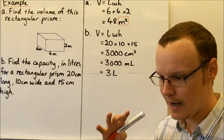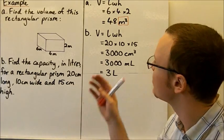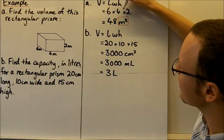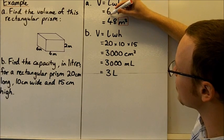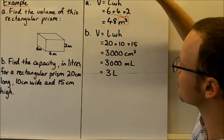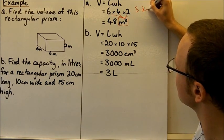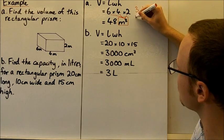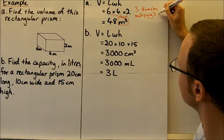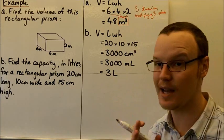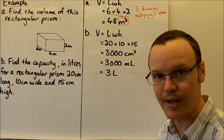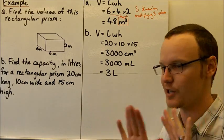Cubic metres is its own unit. What that means is we have 48 individual cubic metres, where one cubic metre is one metre by one metre by one metre. It's related to square metres and metres but is not the same. We've given it three dimensions by multiplying three numbers — that's what makes it three-dimensional. It does not mean you press the cube button on your calculator.